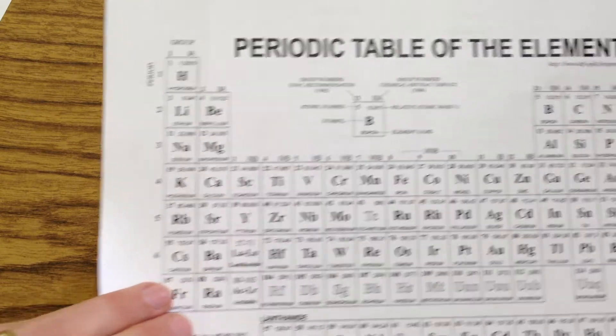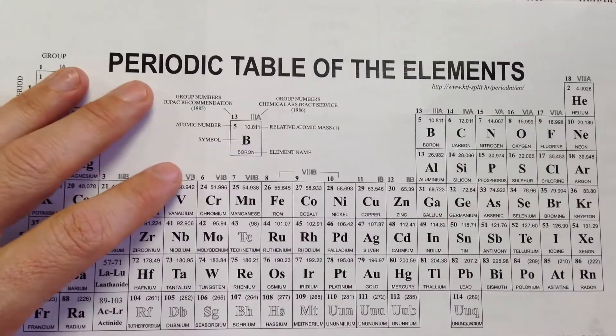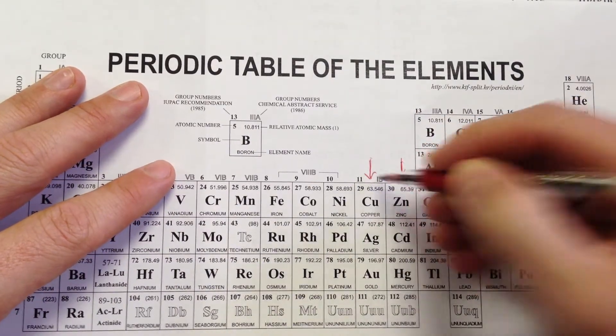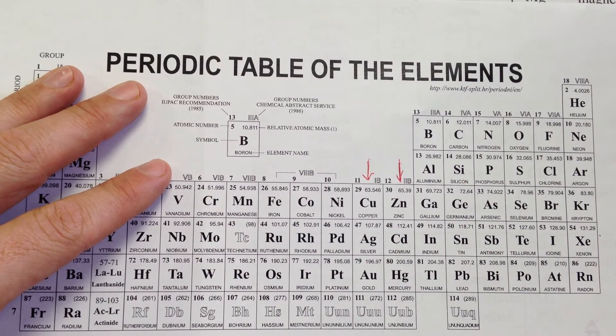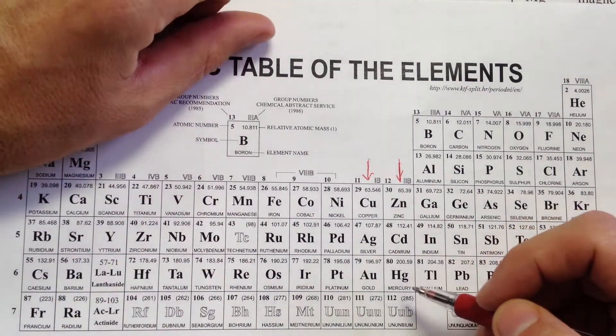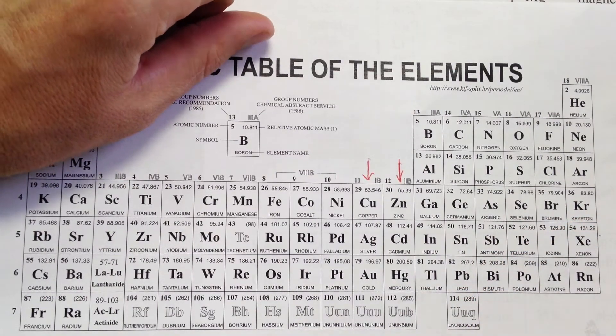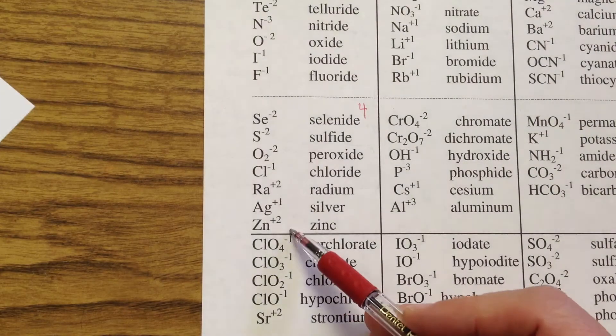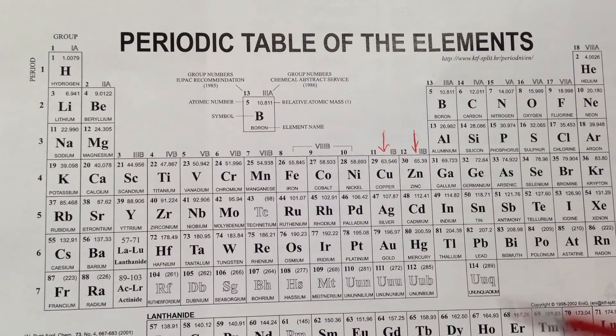And that leads us to two more: silver and zinc. Silver and zinc are in these columns here. You'll notice we haven't learned any tricks for that column, so we have to just memorize these. However, there are a couple of things that will help you remember the charge if you like.